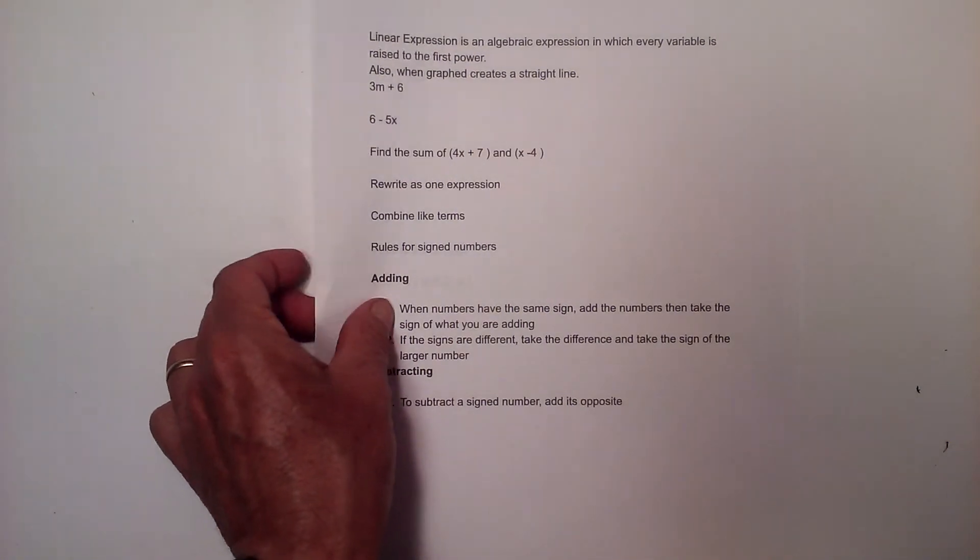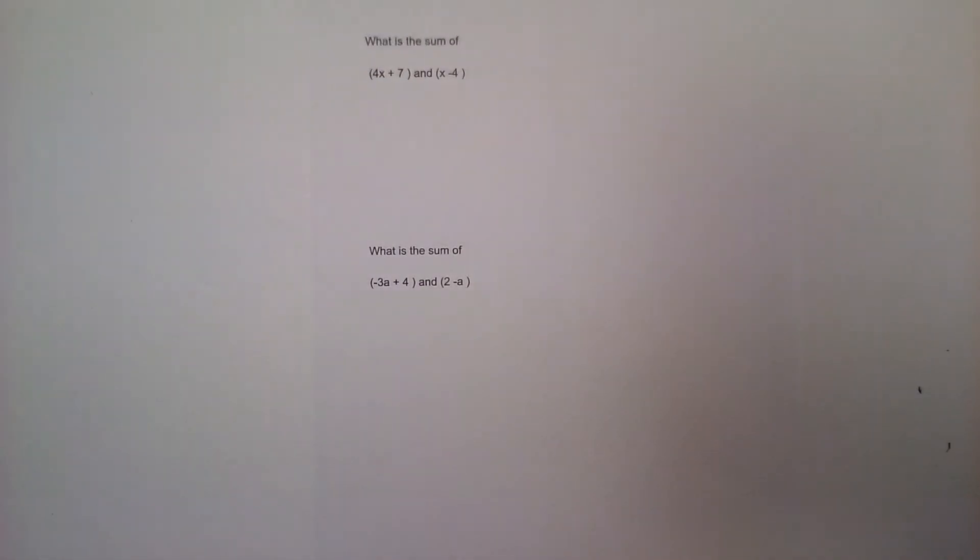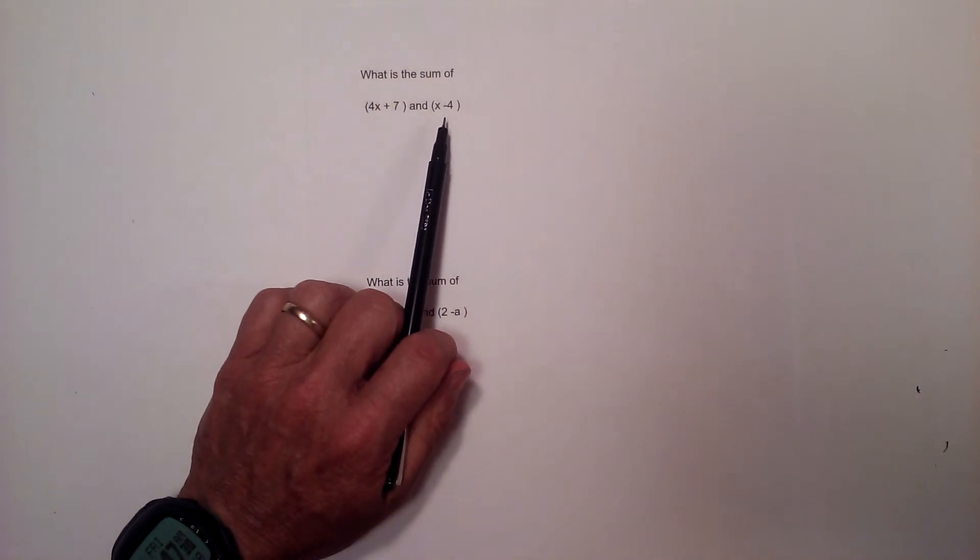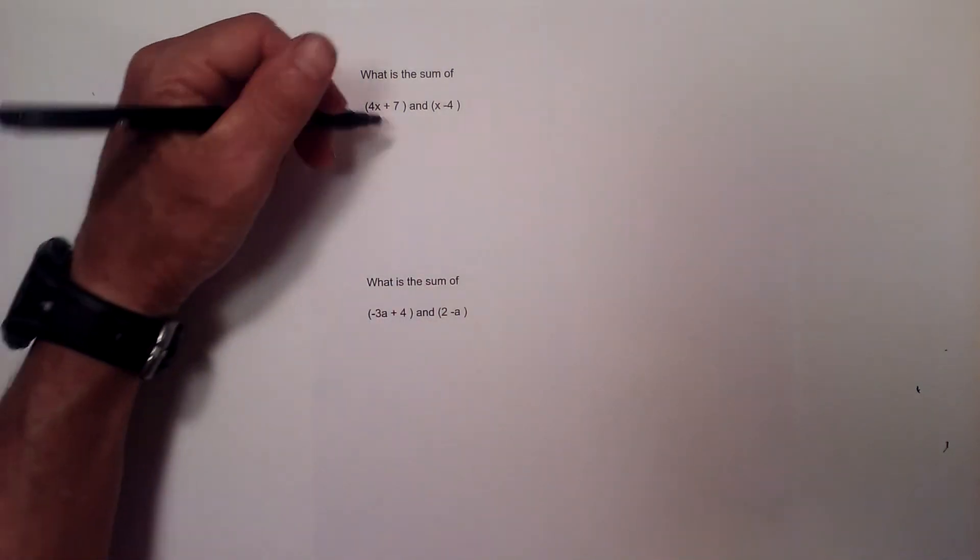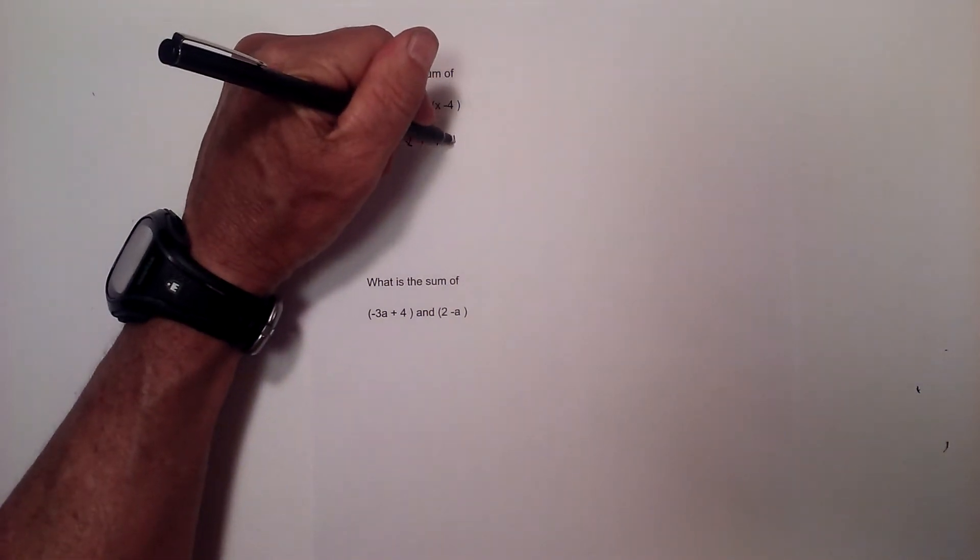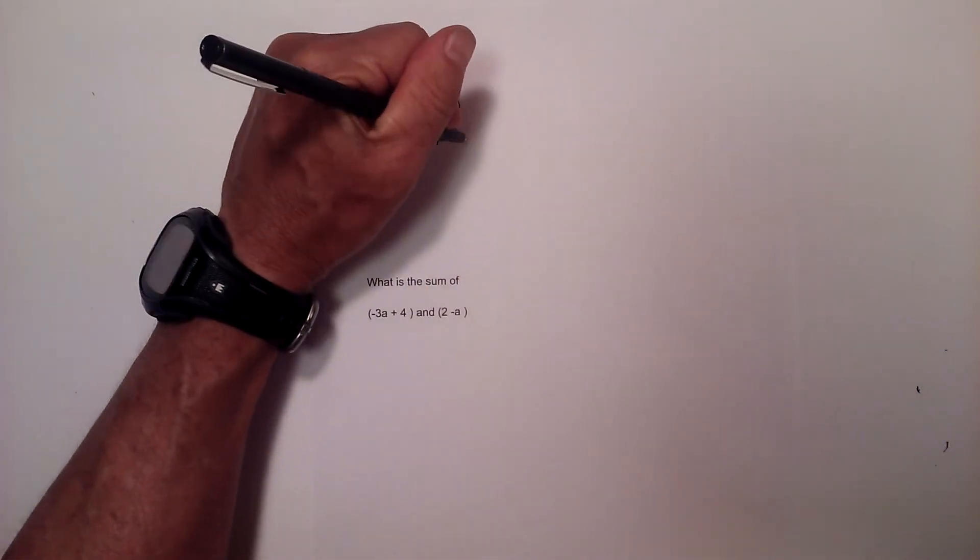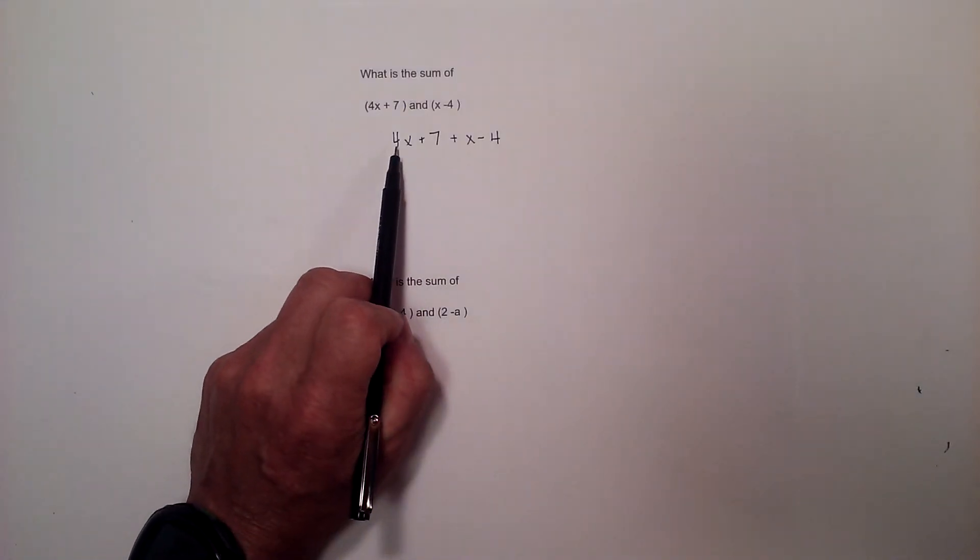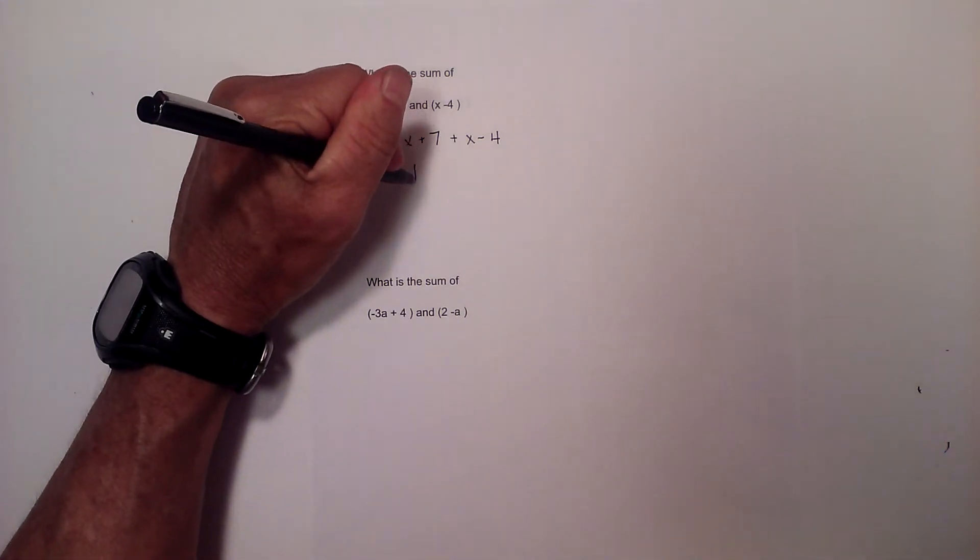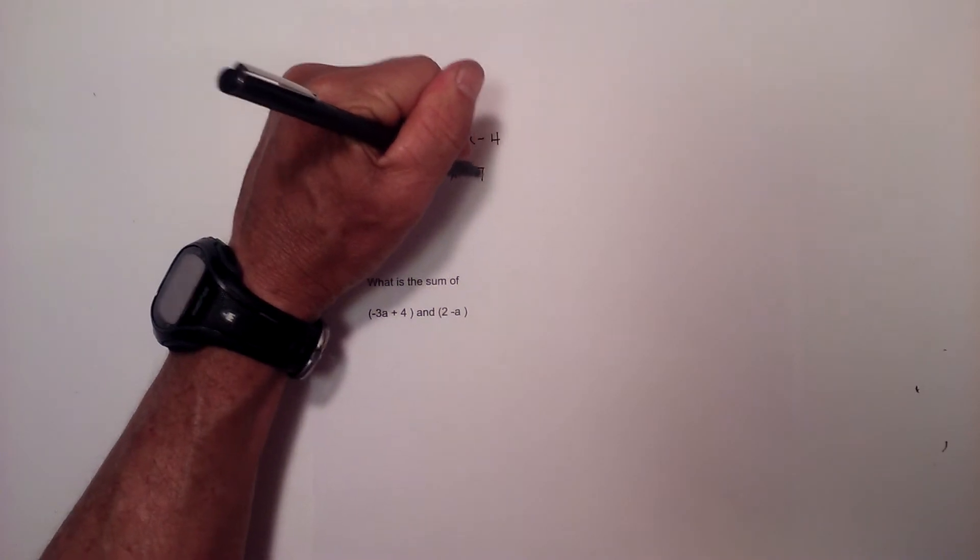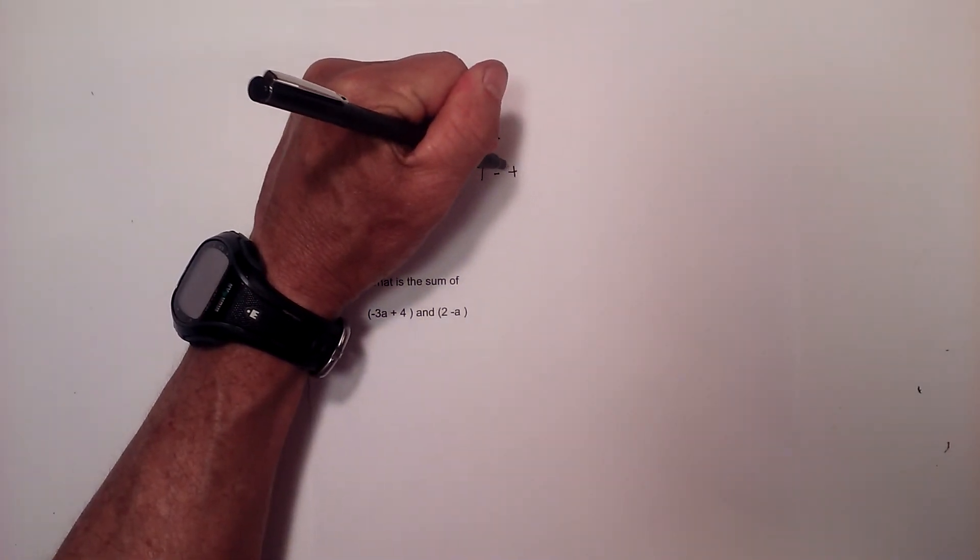So let's work a couple examples. What is the sum of 4x plus 7 and x minus 4? Well I am going to rewrite this as one expression, so 4x plus 7 plus x minus 4. Now I am going to put like terms next to each other. So we have 4x plus x plus 7 minus 4.